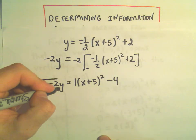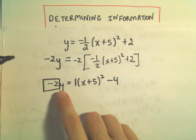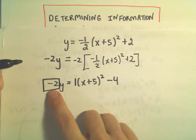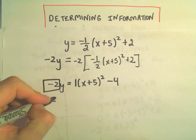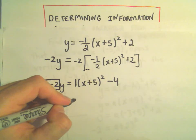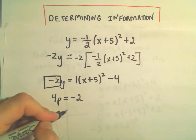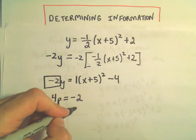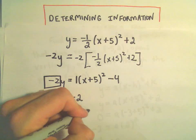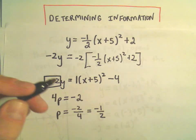Once I do that, I look at the other side. Whatever's sitting next to the coefficient on the y term, we set 4p equal to that value. So in this case, if we solve for p, we're going to get p equals negative 2/4, or negative 1/2.